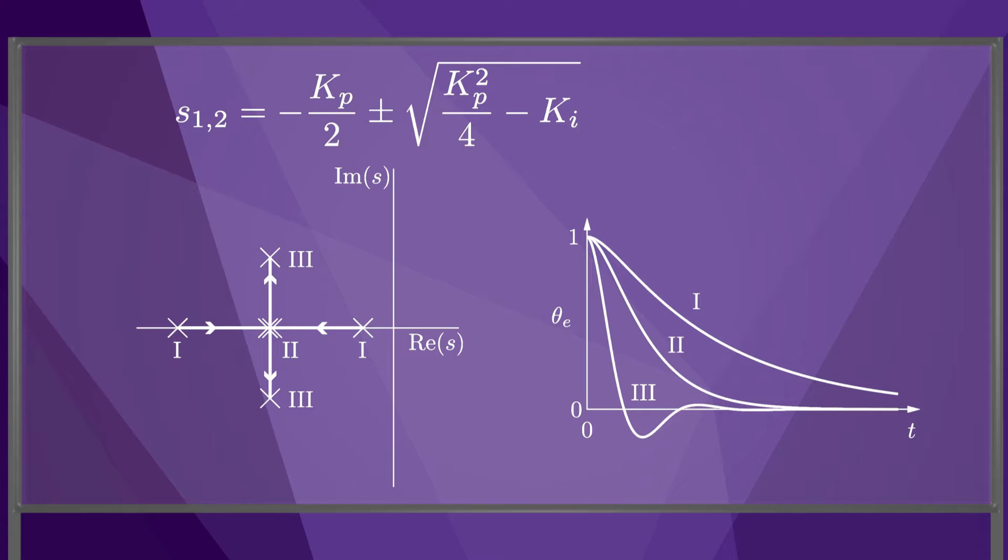Since the real values of the roots are unchanged, the settling time is unchanged, but we now see overshoot and oscillation in the error response. Of the three error responses, the critically damped response, marked two, is the best, since it is fast and has no overshoot.